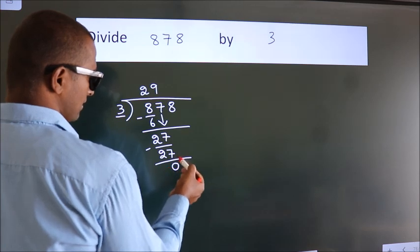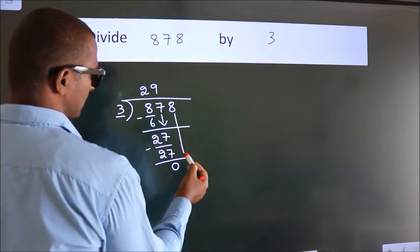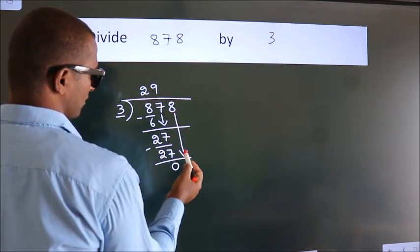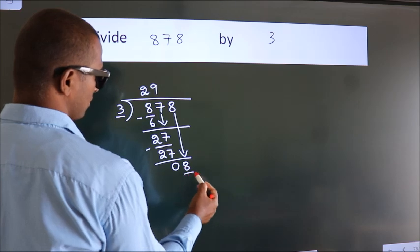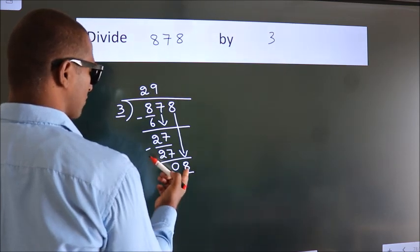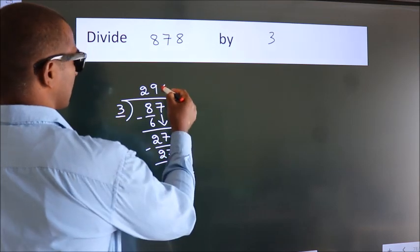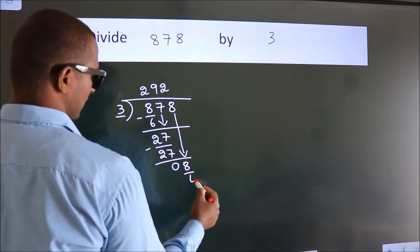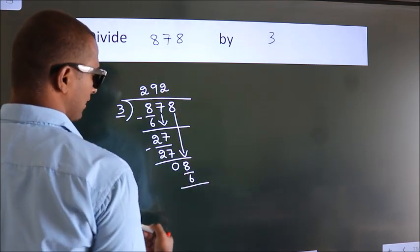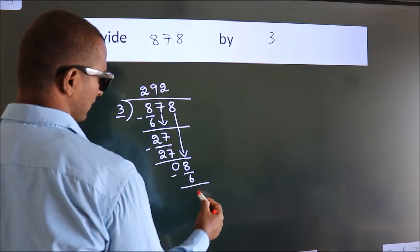After this, bring down the beside number. So 8 down, so 8. A number close to 8 in the 3 table is 3 times 2, which is 6. Now we subtract. We get 2.